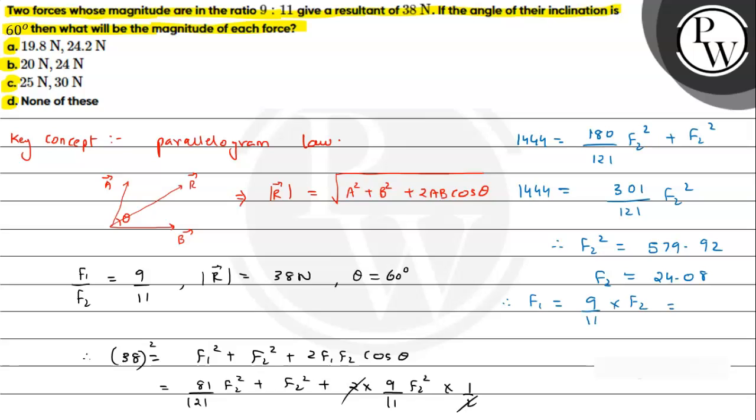Finally we can say this value is coming out to be 19.7 newton. So now we can see the closest option, option A will be the answer for this, that is f1 is 19.8 and f2 will be 24.2.